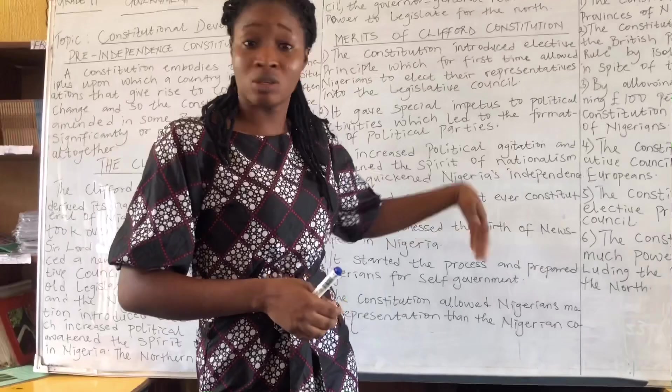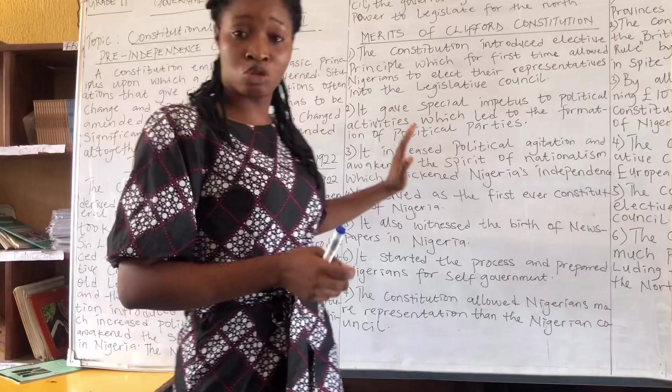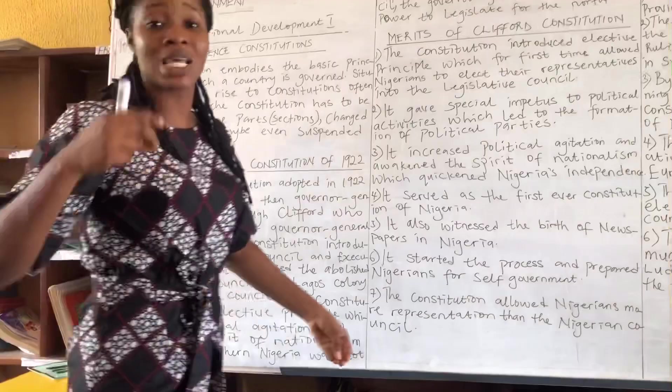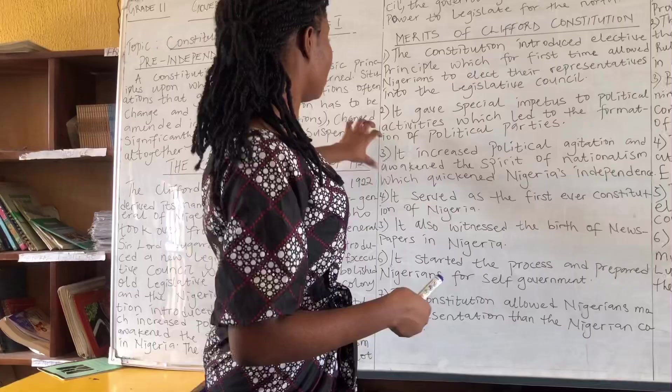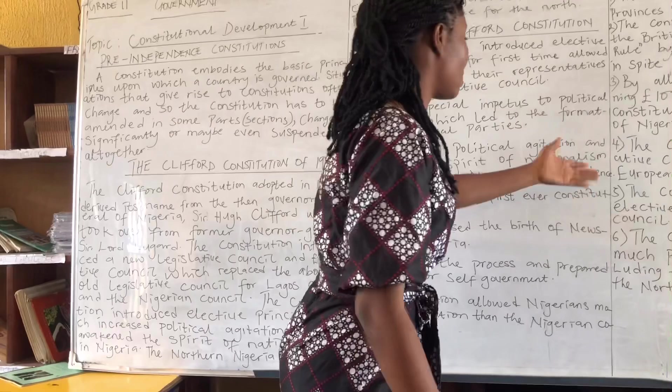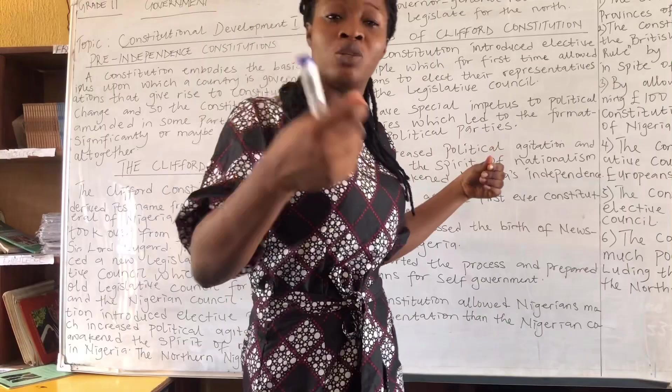All this constitutional development formed the process for Nigerian independence in 1960. Nigerian independence didn't just happen — it was a process. The constitution introduced an elective principle which increased political agitation. People were awakened and said, 'So these people know we can operate a constitution and they've been keeping us in the dark.' Number three: it increased political agitation and awakened the spirit of nationalism, quickening Nigeria's path to independence.